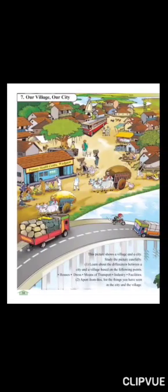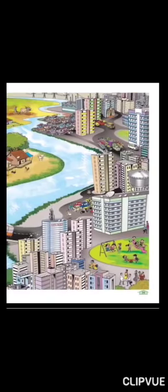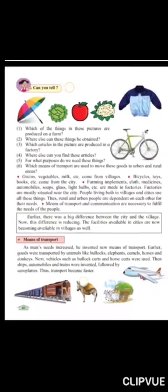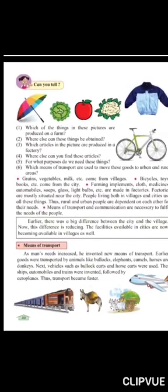First, turn to page number 38 and 39. They have shown you the difference between village and city. In the village photo, you will see an ST bus, bullock carts, and weekly village markets. On the right side, you will see the city — tall buildings, big cars, and everyone traveling in cars. In the village, bullock carts and ST buses are used.